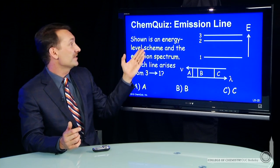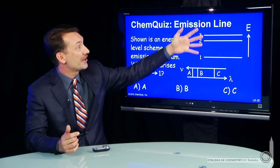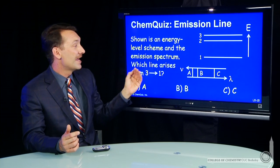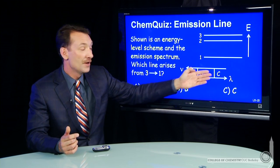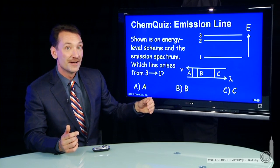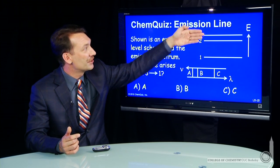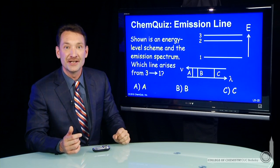Now, let's take this. Let's say a certain piece of matter has this energy level scheme that's shown here, and it has an emission spectrum. Which of these three emission lines arises from the transition of high energy to low energy, three to one emission in this system?